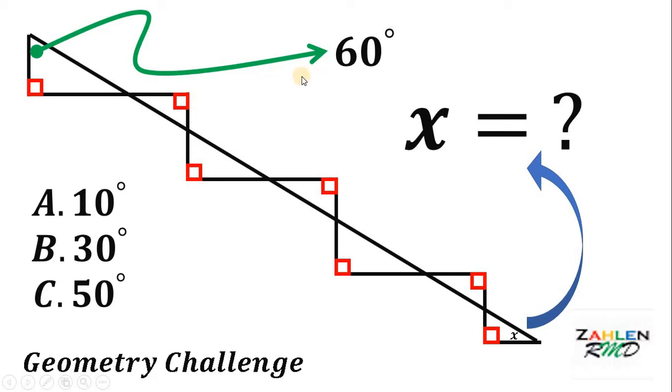Also given that this top angle is 60 degrees. Now our goal here is to find the value of angle x. Here's our choices. Letter A, 10 degrees. Letter B, 30 degrees. And letter C, 50 degrees.